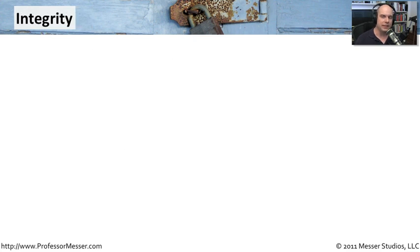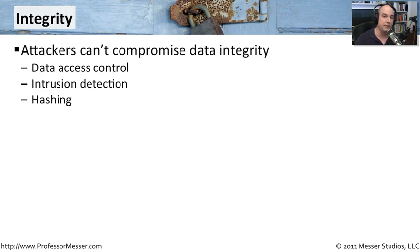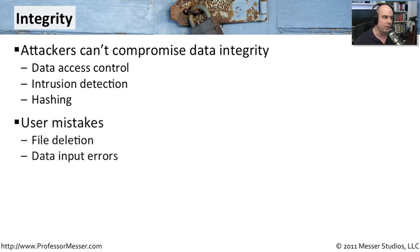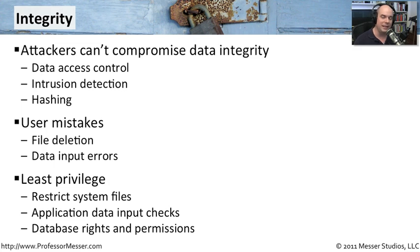Integrity isn't quite as obvious as availability, because we need to make sure that data sent back and forth between systems has not been modified in any way. We may employ methods like access control, or have data hashed so we can compare the hash when it arrives on the other side, and make sure we have systems in place to detect if an intrusion occurs. There may also be problems with users — mistakes like deleting a file or an input error. That's why we talk about least privilege on our systems, ensuring users don't have more access than they should, so that if they make a mistake, it will have a very narrow effect.